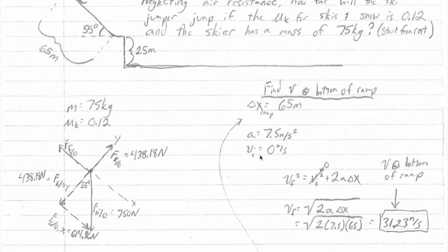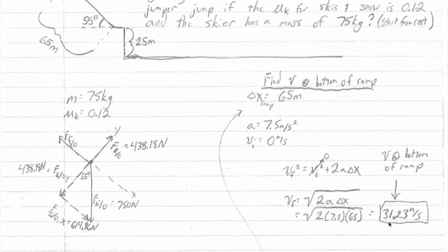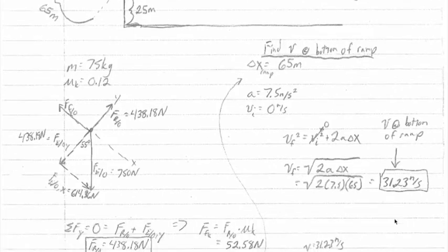Plugging in the numbers that we've written down up here, we wind up finding a velocity at the bottom of the ramp of 31.23 meters per second. And so that means right at this point, when the skier's going to leave this jump and become airborne, he's traveling horizontally at 31.23 meters per second.